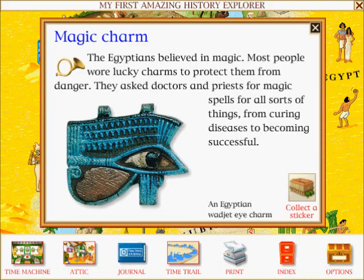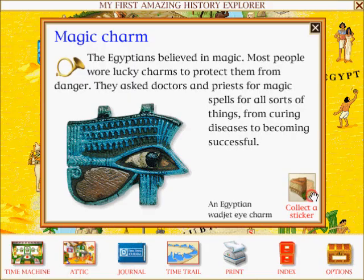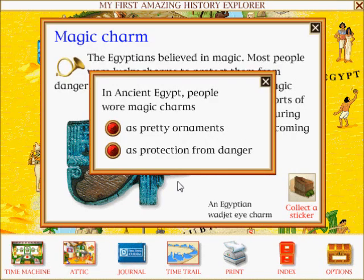Magic charm: The Egyptians believed in magic. Most people wore lucky charms to protect them from danger. They asked doctors and priests for magic spells for all sorts of things, from curing diseases to becoming successful. In Ancient Egypt, people wore magic charms as protection from danger.